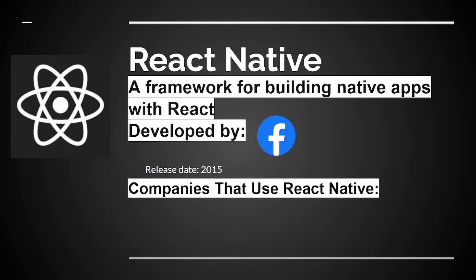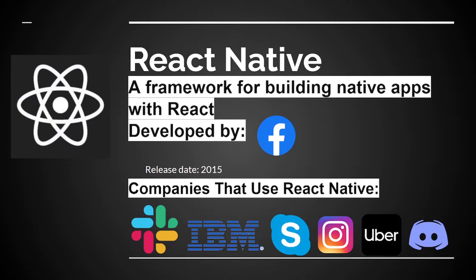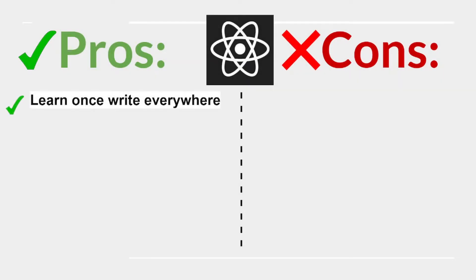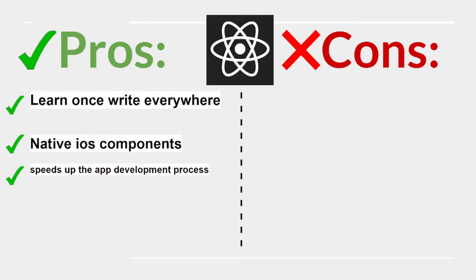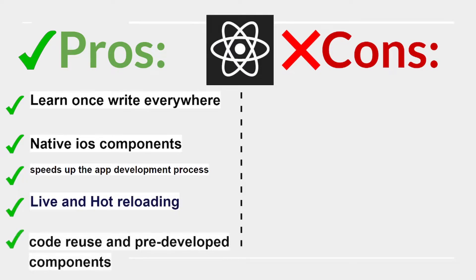React Native is a framework for building native apps with React, developed by Facebook, released in 2015. Companies using React Native include Slack, IBM, Skype, Instagram, Uber, and Discord. Pros: learn once, write everywhere; native iOS components; speeds up the app development process; live and hot reloading; code reuse and pre-developed components.